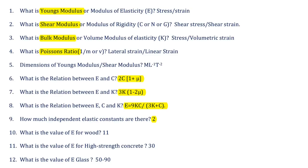Eighth question: what is the relation between E, C, and K? The three important relations are: E = 2C(1 + μ); E = 3K(1 − 2μ); and E = 9KC / (3K + C).